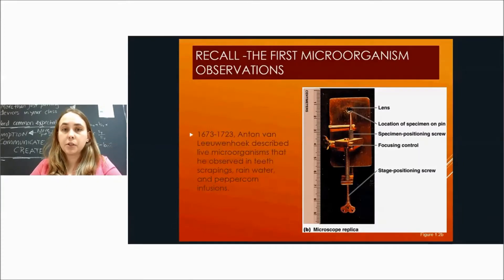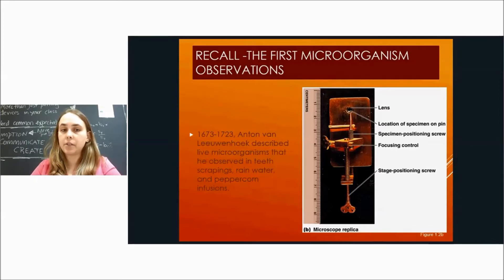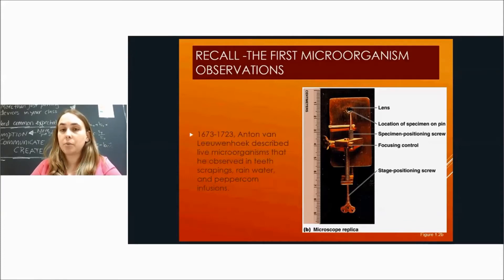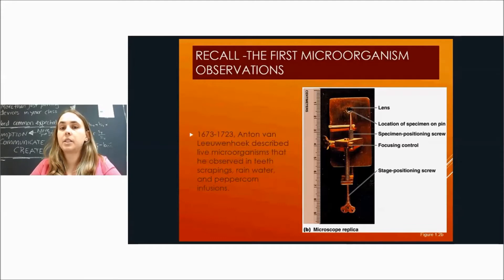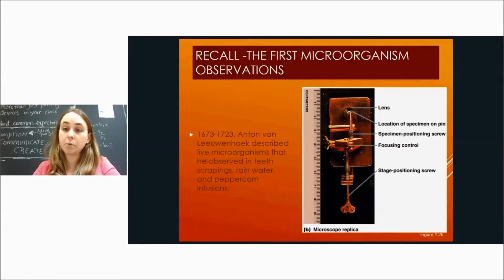Recall that the first microorganisms observed were by Anton van Leeuwenhoek, who described live microorganisms he observed in his teeth scrapings, rainwater, peppercorn infusions, and pond water. This was the microscope that he made — the lens was the little small circle, and he put his specimen on the tip of his pen. He could change the focus by adjusting the screws to move it up, down, in, or out.